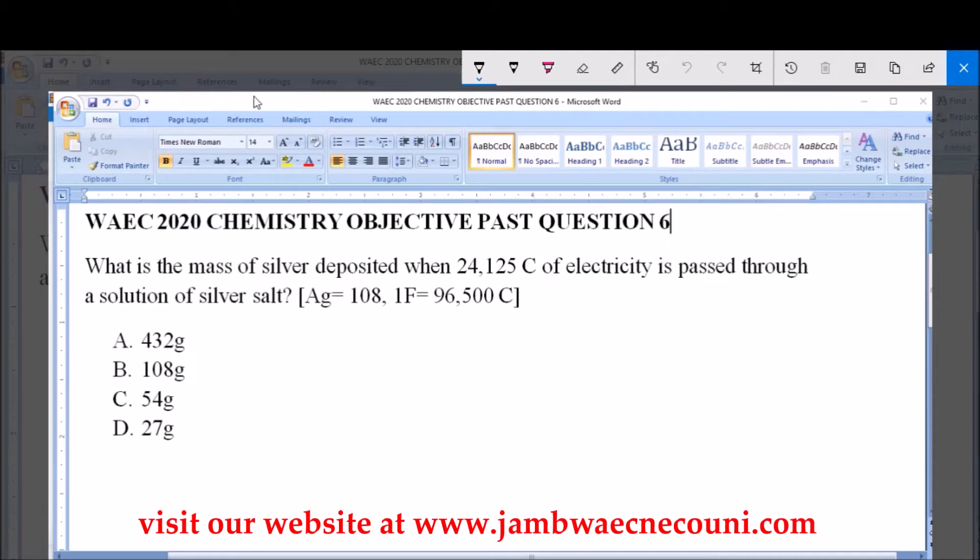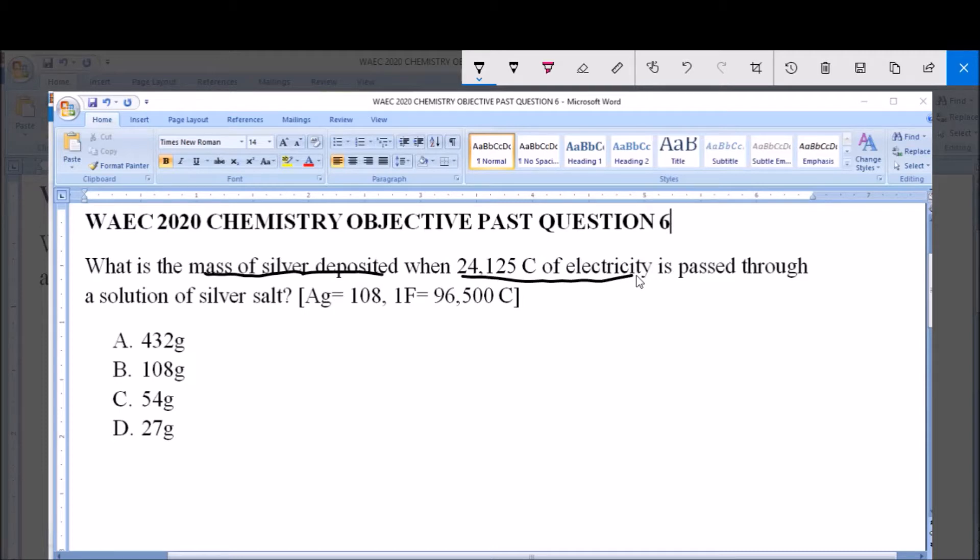So what we are calculating is mass of silver deposited when you have this electrolytic process, when you have this quantity of electricity passed through a certain solution containing silver salt. So as rightly established here, 1 Faraday is equal to 96,500 coulombs.